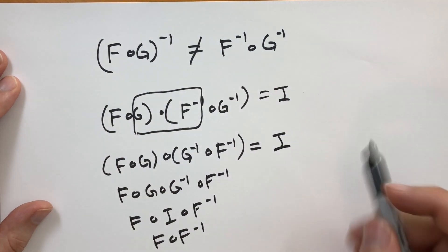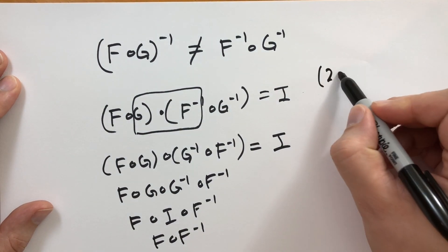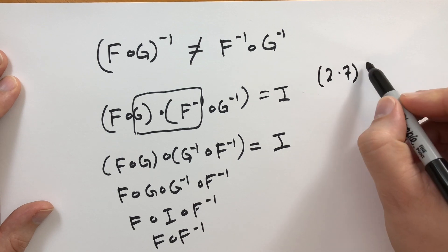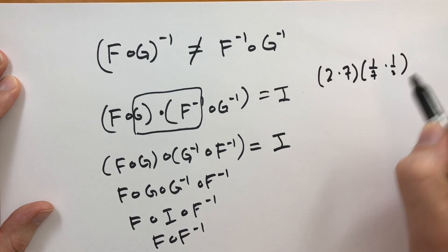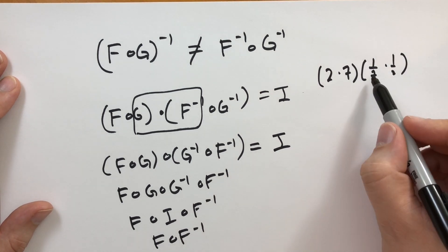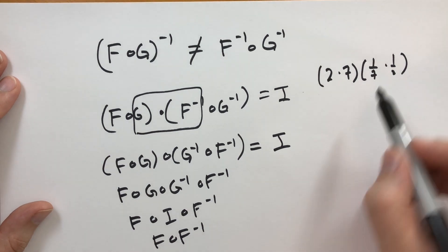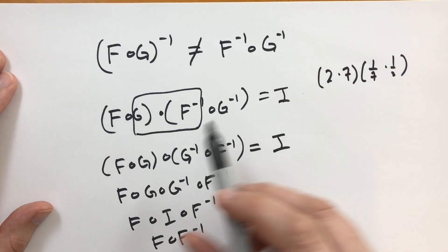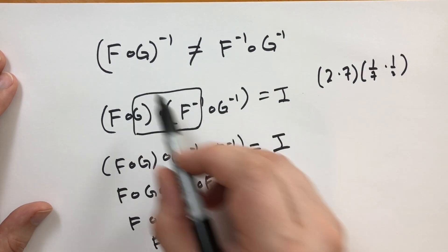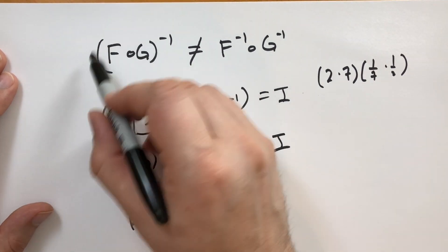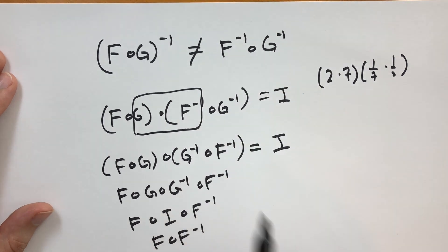You might see some mathematicians, when finding the inverse of 2 times 7, multiply by 1/7 then 1/2, because 7 × 1/7 = 1 and 2 × 1/2 = 1. This also occurs in matrices. The inverse of a composition is the inverses of each element in reversed order — a common pattern.